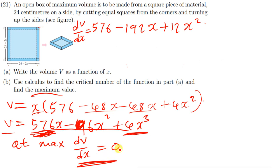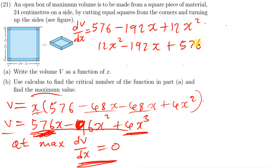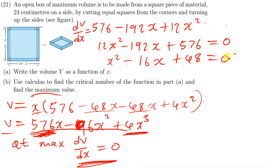At maximum, dV/dx = 0, so we set the expression equal to zero: 12x² − 192x + 576 = 0. We can simplify by dividing through by 12, which gives: x² − 16x + 48 = 0.